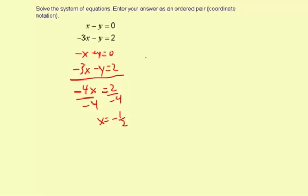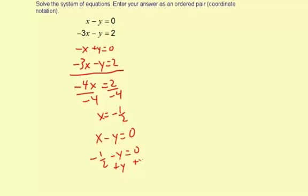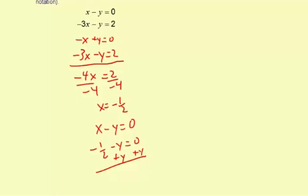So now to find the y value, I'm going to use this first equation. I'm going to substitute the negative 1 half for x, and then solve for y. So the equation is x minus y equals 0, and I'll substitute negative 1 half in for x, so negative 1 half minus y equals 0. And then what I'm going to do is I'm just going to go ahead and add y to both sides, because that'll be the quickest way to solve for y. Add y to both sides. So negative 1 half equals y.